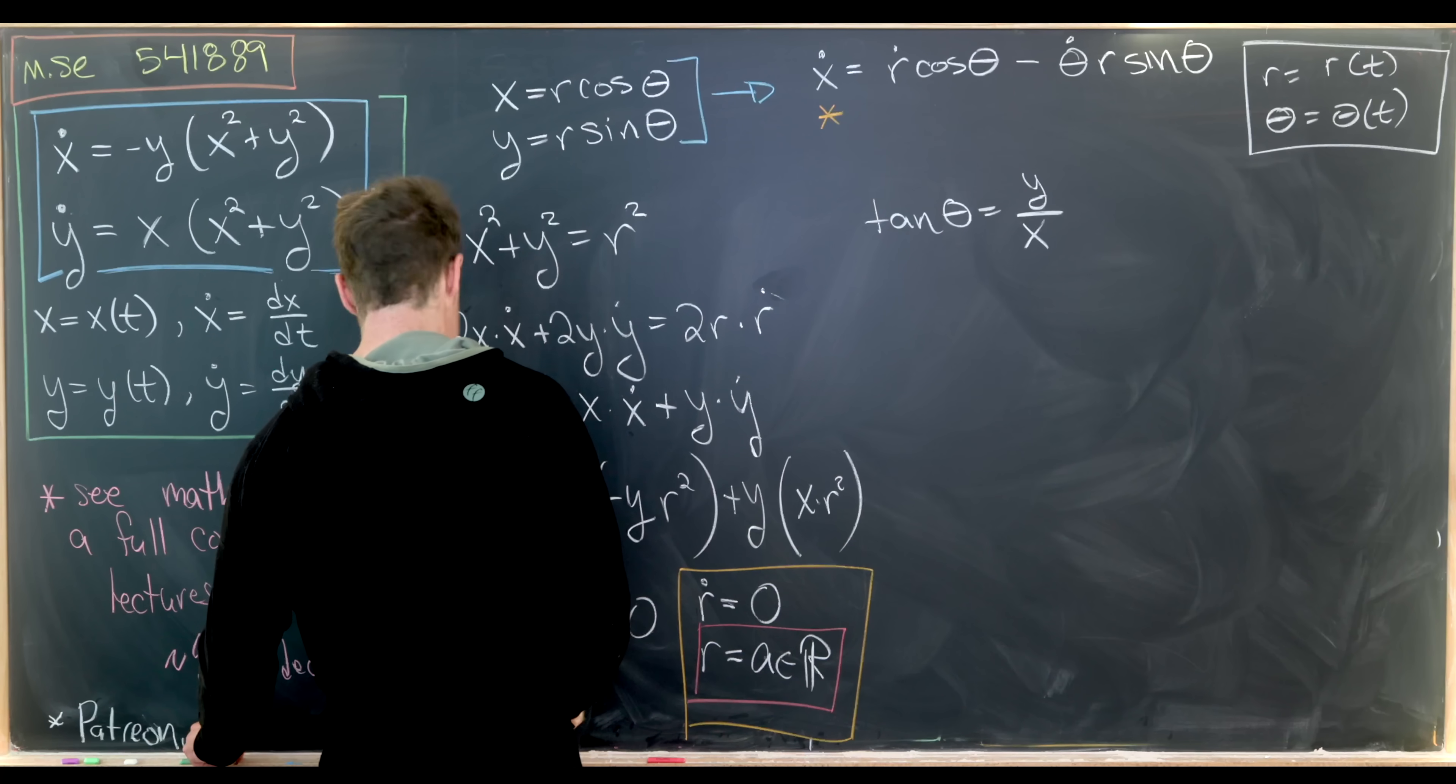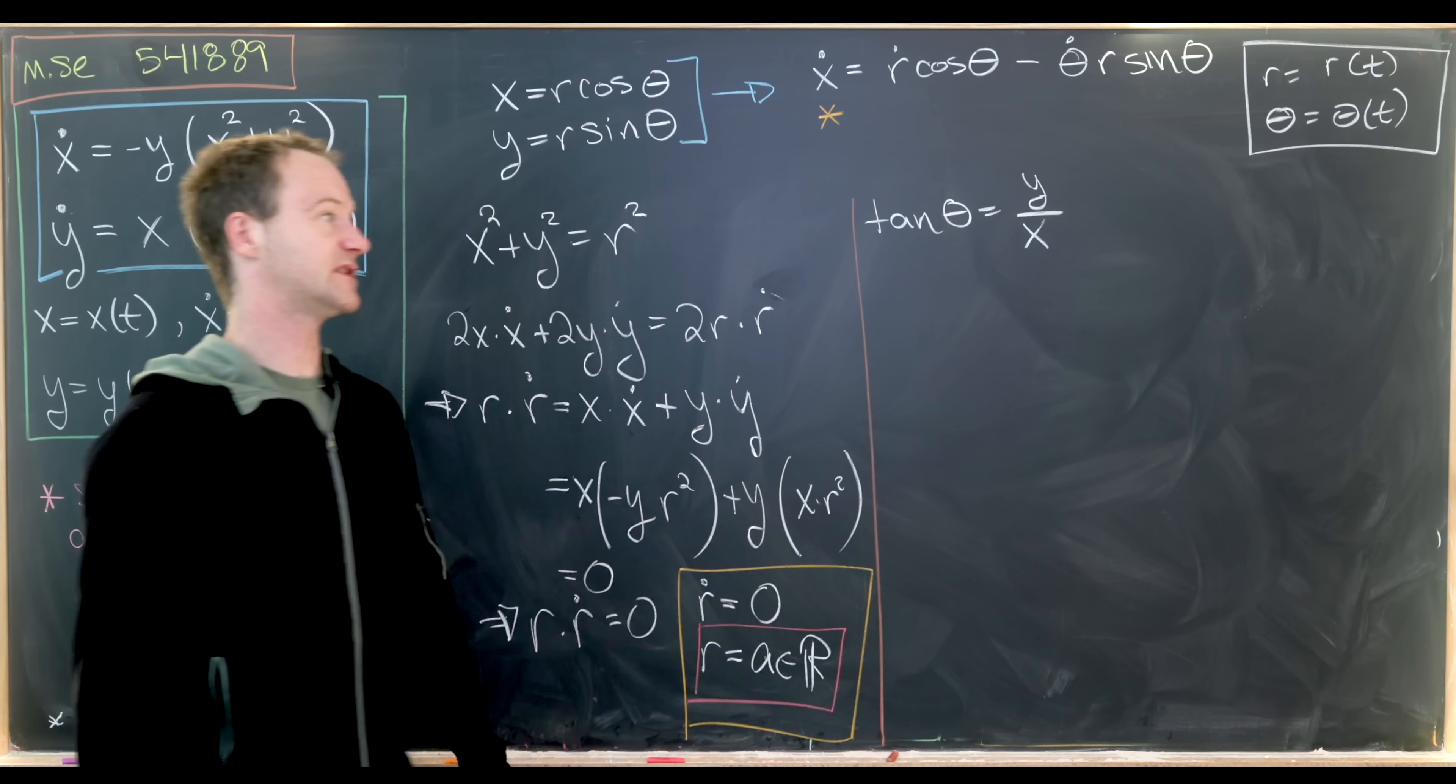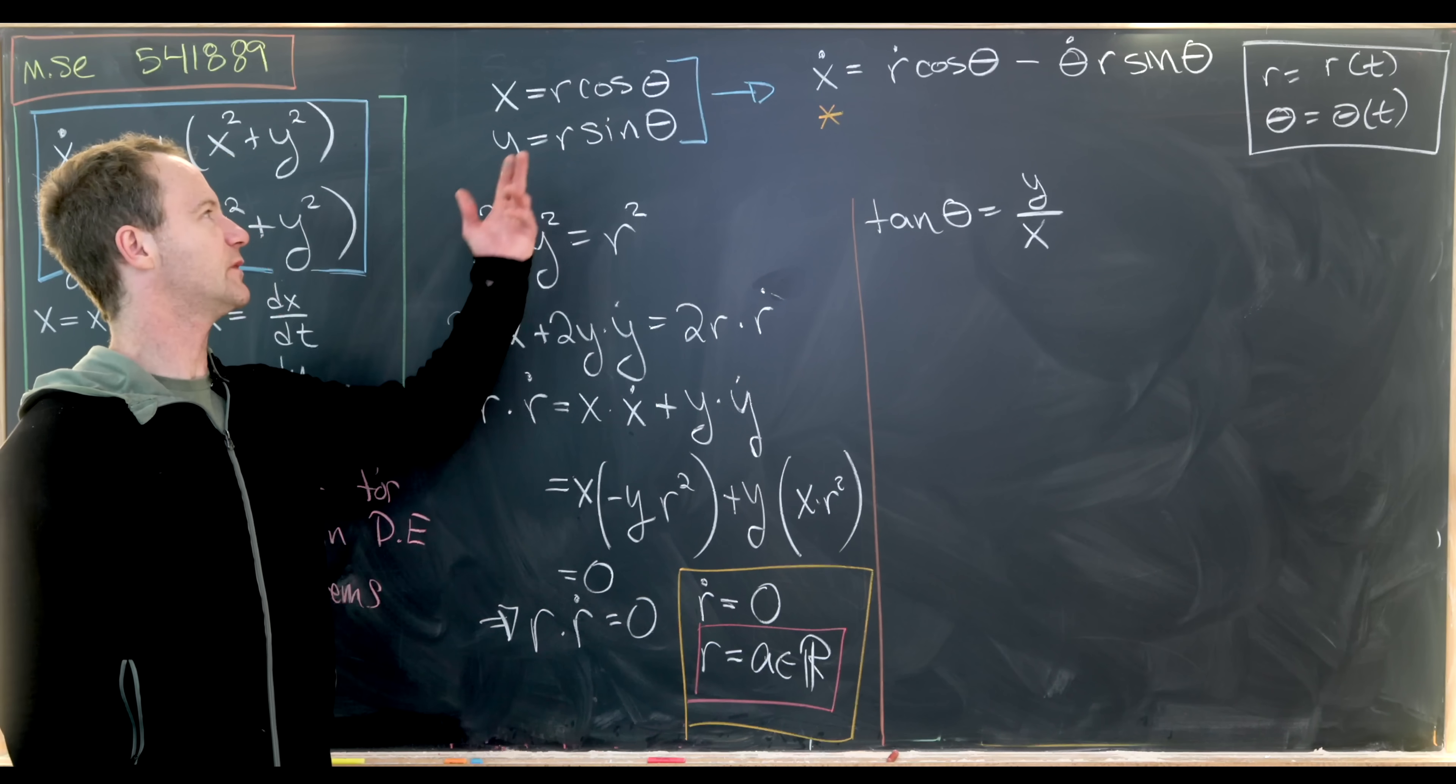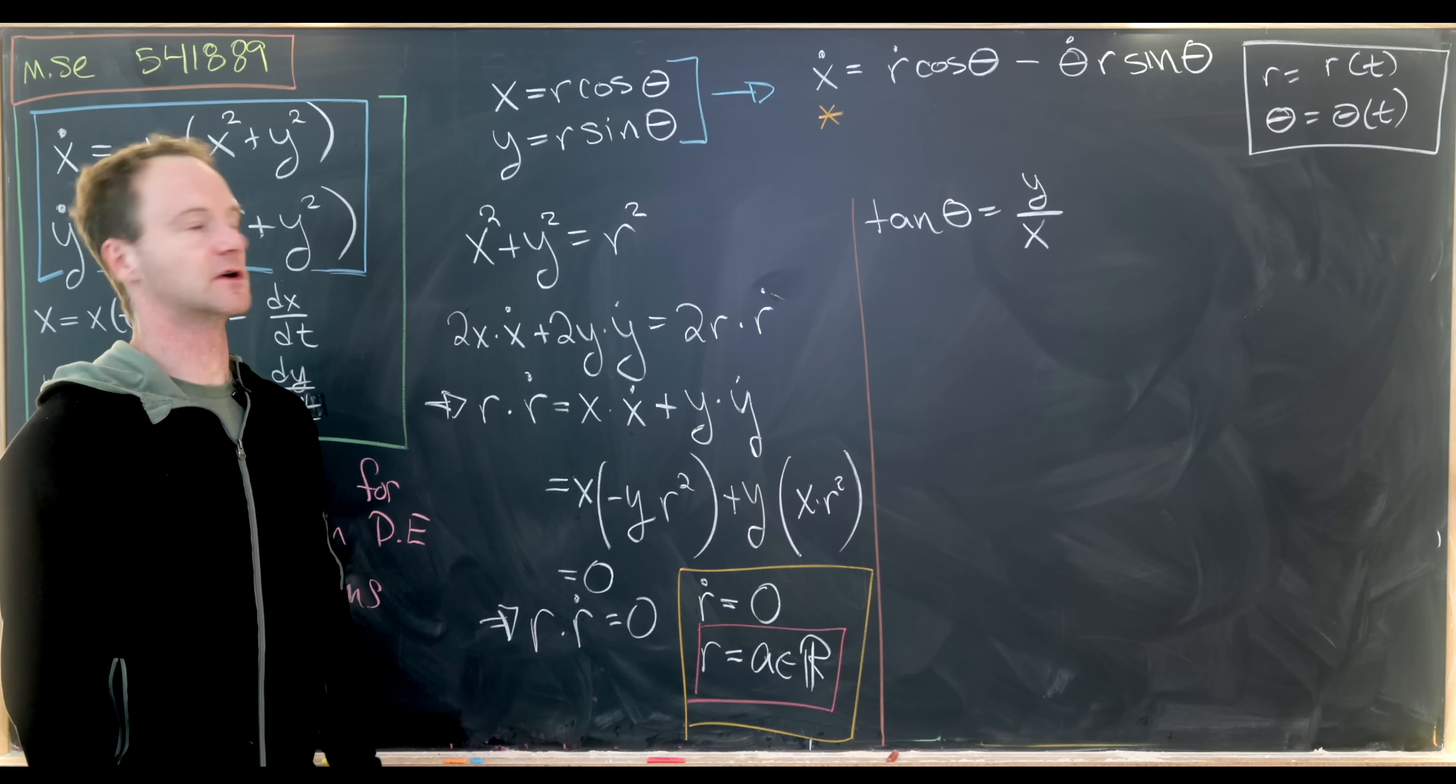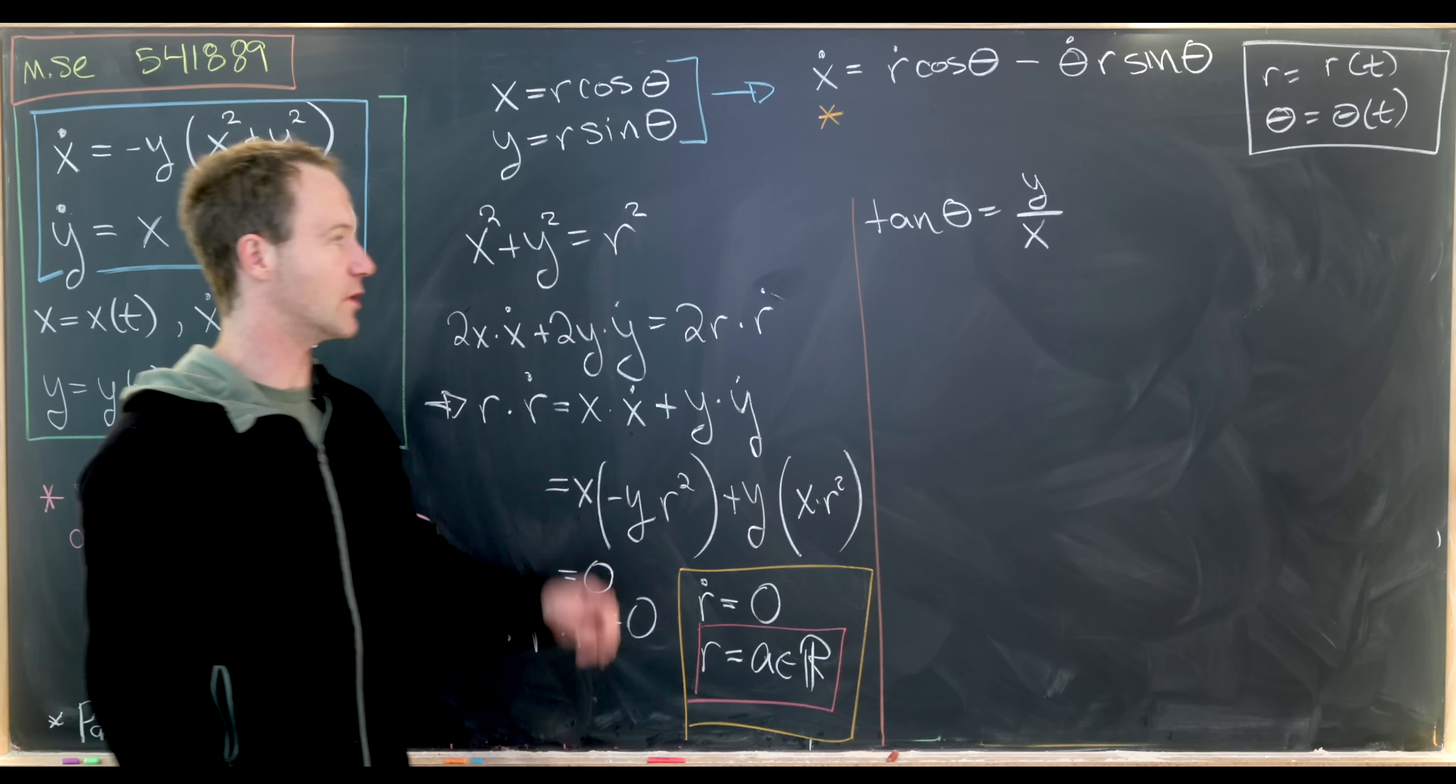Now we're going to play a similar game over here with this tangent θ equals y over x. Again, we get that just because sine over cosine is equal to tangent. Okay, so let's take the derivative of both sides.